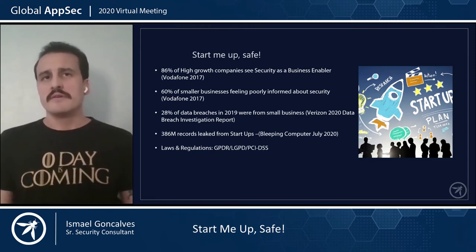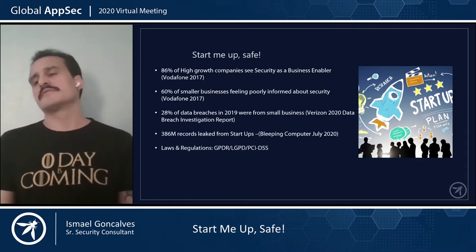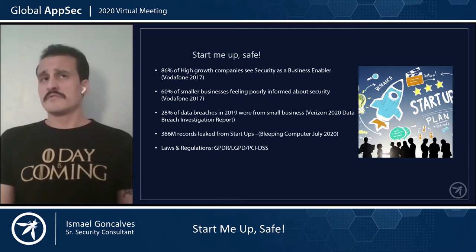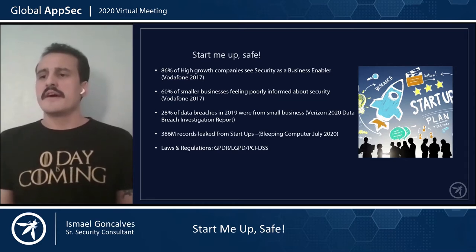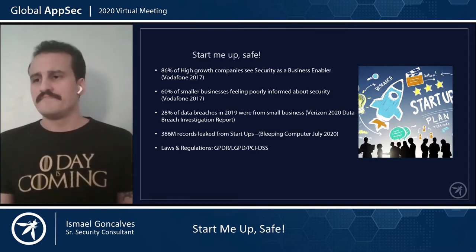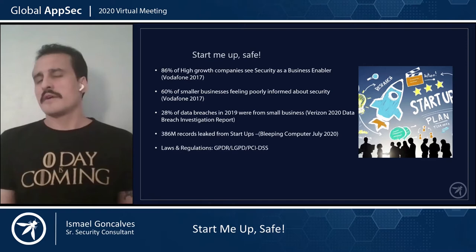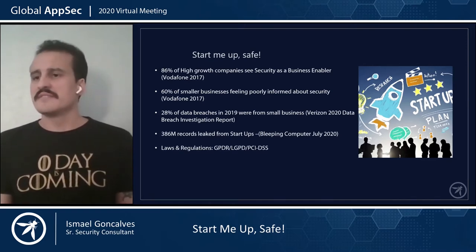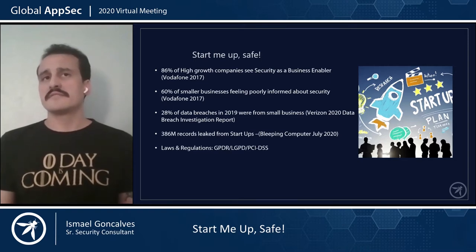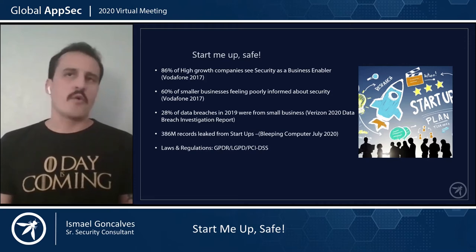There are a couple of interesting numbers here. There is research from Vodafone that says 80% of high-growth companies see security as a business enabler. That means those leaders see security as a vehicle to increase business partnerships, retain customer loyalty, and be ready to expand their markets. Being compliant with regulations and law allows them to expand their business and partnerships in general. However, 60% of smaller business companies feel poorly informed about security — and that's security in general. Imagine now application security, which is a quite complex topic, as you can see with a whole conference dedicated to AppSec.